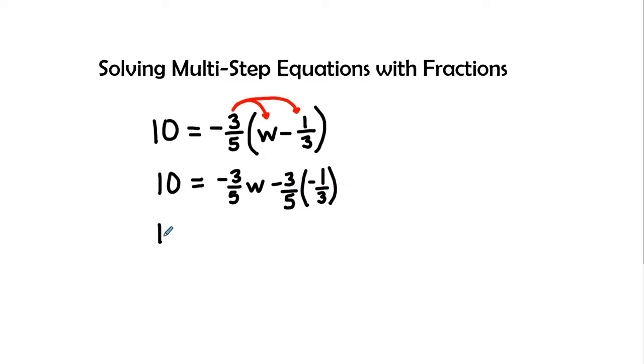Our next step is 10, bring down the 10, equals negative three-fifths w. And then we see a negative times a negative is going to be a positive, and then we see three times one is three, and five times three is fifteen. So three over fifteen can be simplified down to one-fifth.